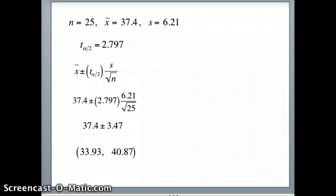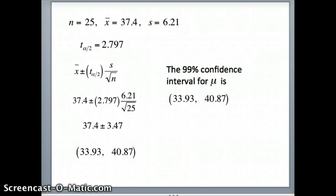This is a 99% confidence interval. So the probability is 99% that this interval will capture the overall population mean mu. We can't be sure. We're never certain it's there, but the probability is 99% that this interval, this range of values will indeed capture the overall population mean mu. So we conclude by saying the 99% confidence interval for mu is the range of values from 33.93 to 40.87.